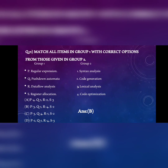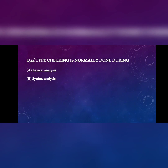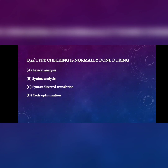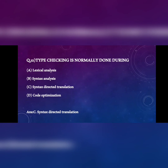Next question: type checking is normally done during A) lexical analysis, B) syntax analysis, C) syntax directed translation, D) code optimization. Syntax directed translation means translating from a sequence of tokens to some other form. Type checking is done during syntax directed translation, so the answer is C.